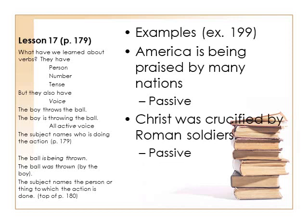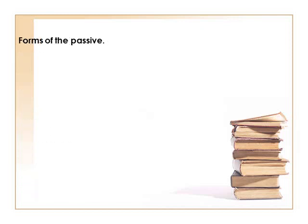So here, if we look at exercise 199, we've got some examples in our own language. America is being praised by many nations — so America is the subject, America is being acted upon, America is being praised. Christ was crucified by Roman soldiers. So if we were going to parse this, it would be third person — Christ — it would be perfect tense — was crucified — it would be singular, not many Christ. It was Christ. And it would be passive voice. So Christ was crucified, and who was he crucified by? By the Roman soldiers.